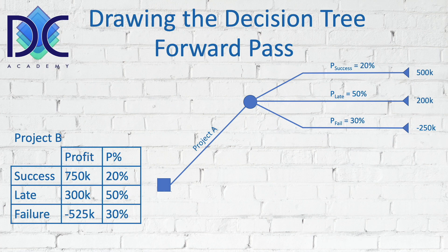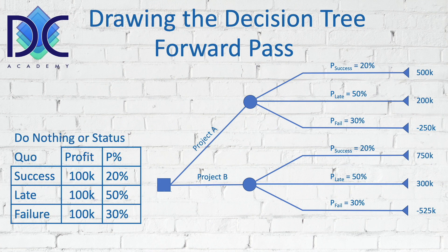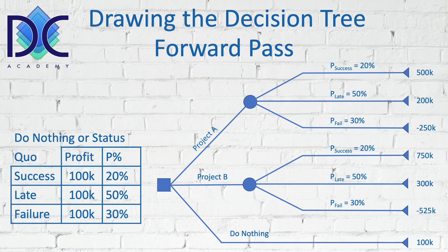For Project B: success gives 750k, late gives 300k, and failure gives a loss of 525k, with the same probabilities of 20, 50, and 30 percent. We extend the tree with a Project B branch and its three events and outcomes. We also add a Do Nothing or status quo branch where the profit is 100k in all three cases — success, late, or failure — since there is no actual project with a success or failure condition.